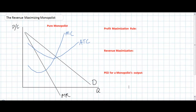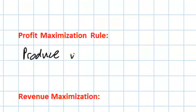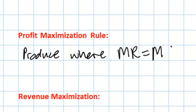Let's begin with the profit maximization rule. When studying perfect competition we learned that in order to maximize its profits a firm should always produce at the level of output where the marginal revenue to the firm equals the firm's marginal cost of production. At this level of output there is no way a firm can increase its total profits by either reducing its output or by increasing its output.